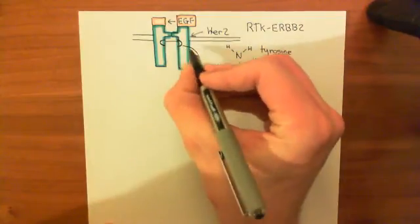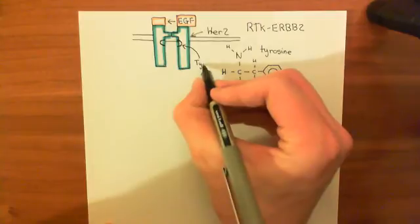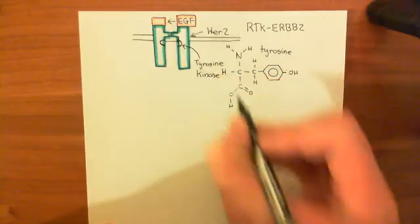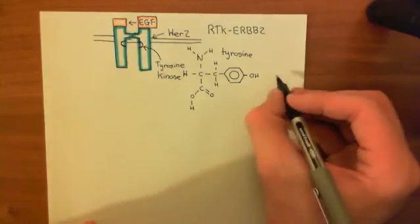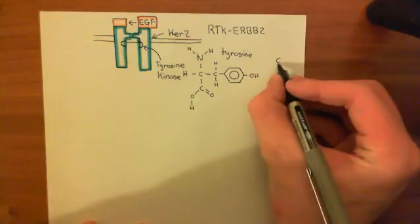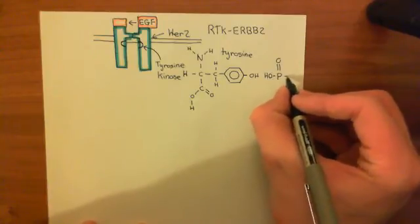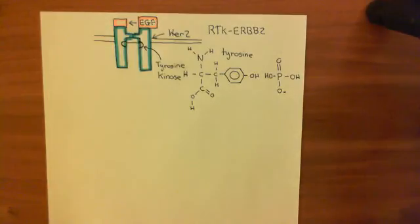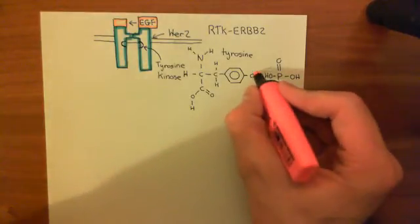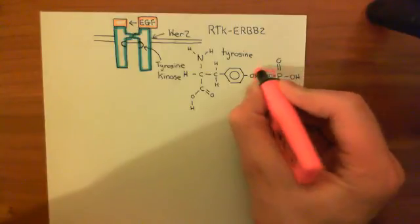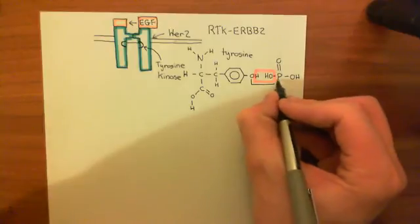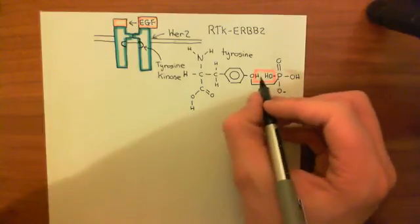This catalytic domain is a tyrosine kinase — it can add phosphate groups onto the hydroxyl group of the tyrosine amino acid. A phosphate group consists of a phosphorus atom double bonded to an oxygen, two hydroxyl groups, and a singly bonded oxygen with a negative charge. What can happen is a condensation reaction between the phosphate group and the hydroxyl group of the tyrosine amino acid, removing the hydroxyl from the phosphorus and the hydrogen from the hydroxyl of tyrosine, binding the oxygen to the phosphorus atom — creating a phosphorylated tyrosine residue.